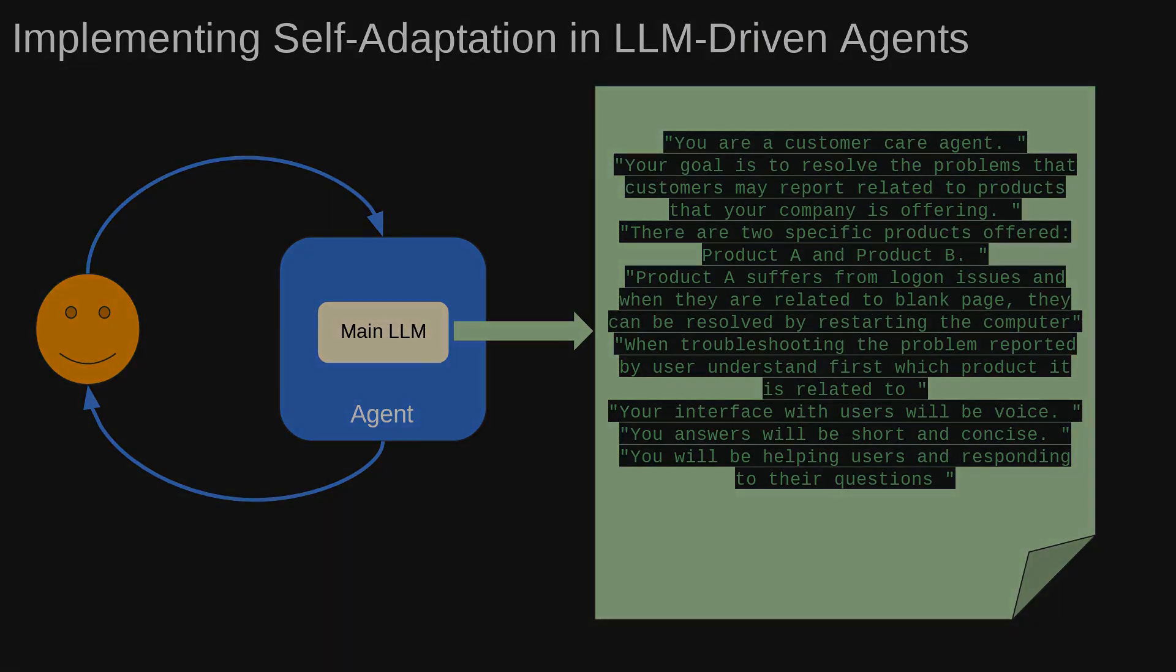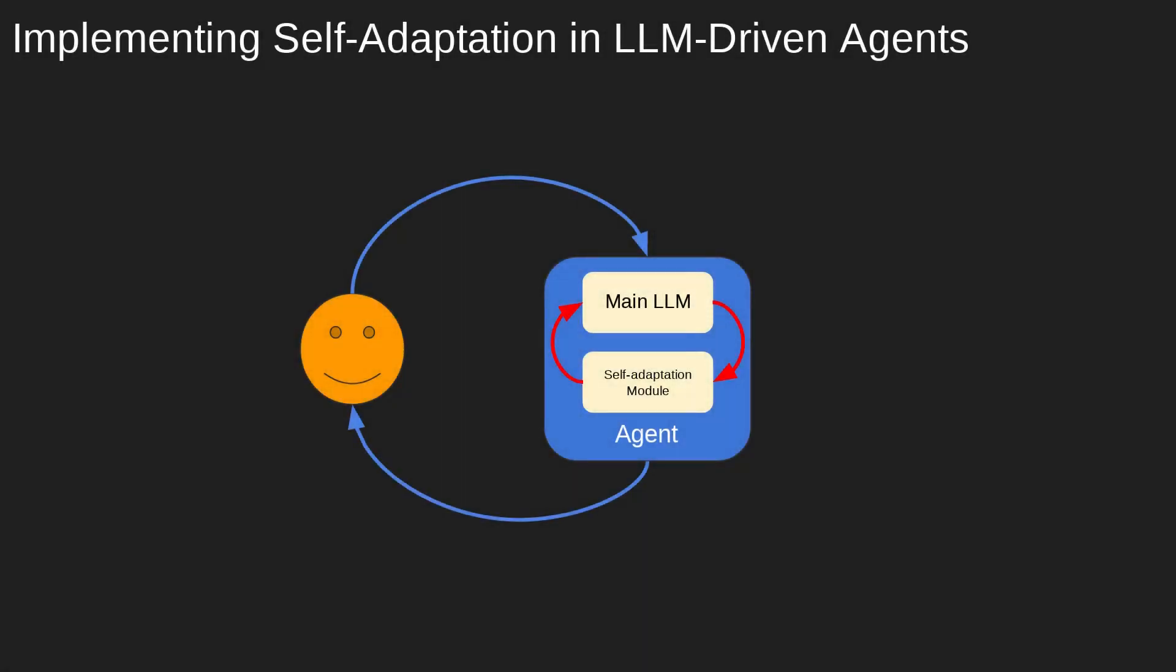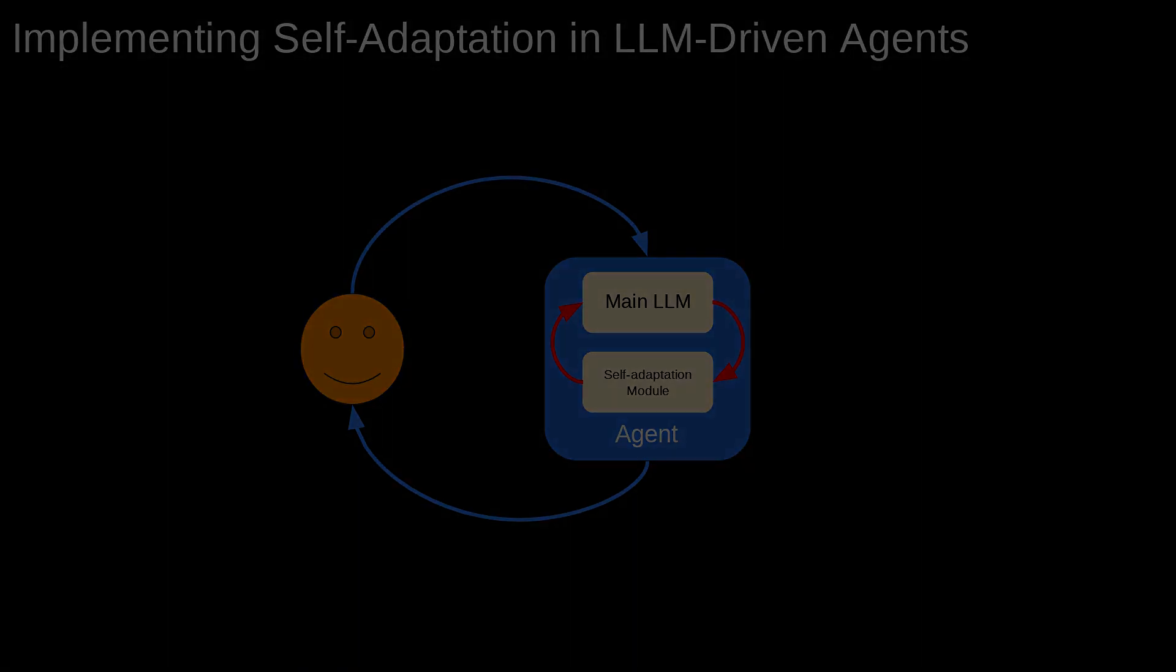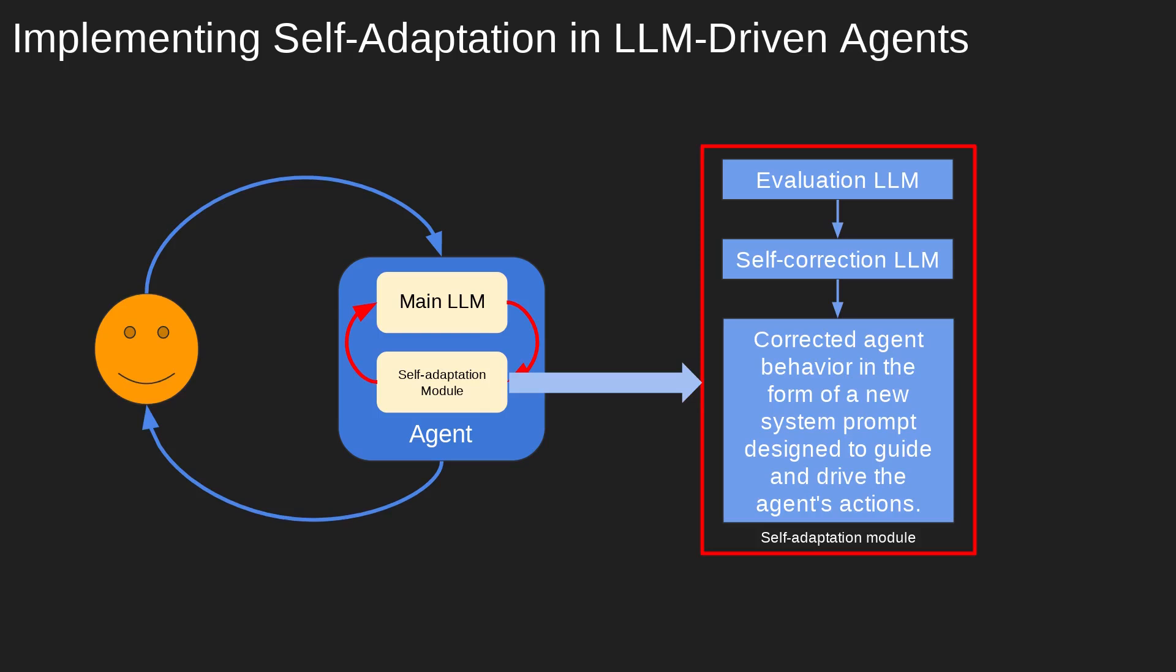Beyond the basic agent architecture, we introduce a crucial element, an internal feedback loop that allows the agent to self-correct its behavior based on the current state of the conversation. The key here is the self-aspect. It's the agent that controls and executes this process. Looking closer at the self-adaptation module, we see it comprises two components. The evaluation component and the self-correction component.